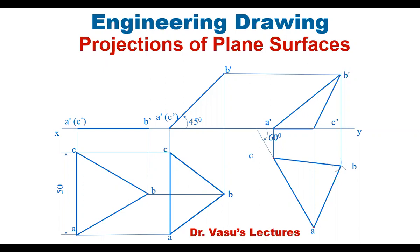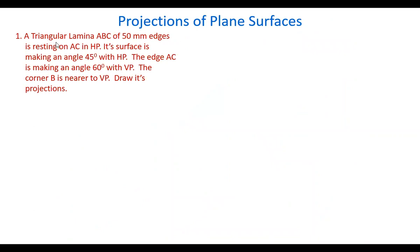Now let's see the projections of a plane surface when its surface is making angle with both the planes. Let's take a triangular lamina ABC of 50mm edges, resting on edge AC in HP. Its surface is making 45 degrees with HP, and AC is making 60 degrees angle with VP — that means the surface is making angle with both the planes. The corner B is nearer to VP.